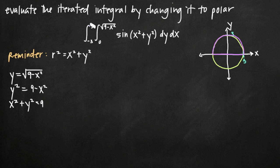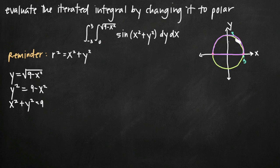Looking at the outer integral, which has limits of integration relating to x — since dx is on the outside — it tells us the leftmost value x can attain is negative 3 and the rightmost is positive 3, all the way at these endpoints. The x values aren't limiting the area any further than the y limits did. If it had said negative 2 to positive 2, we would only have that smaller region. But because it's negative 3 to positive 3, we're looking at the entire half circle above the x-axis.